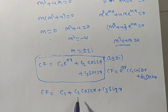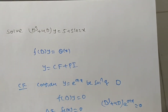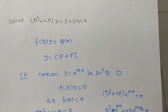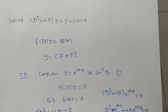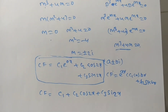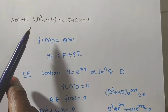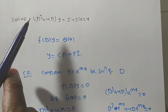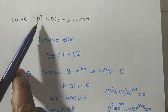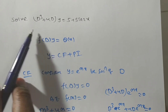Here c₁, c₂, c₃ are arbitrary constants. The order of the differential equation is 3, so we get 3 arbitrary constants — that is consistent. Now we need to find the particular integral as well.